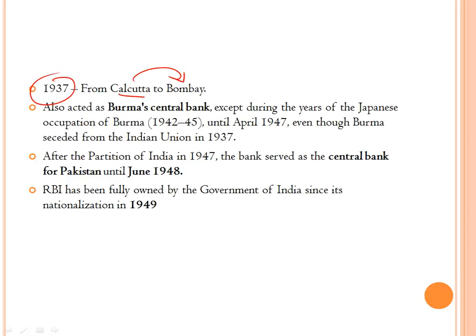The RBI also acted as Burma's central bank — except during the years of Japanese occupation of Burma from 1942 to 1945 — until April 1947, even though Burma had seceded from the Indian Union in 1937. After the partition of India in 1947, the RBI served as the central bank for Pakistan until June 1948. The RBI has been fully owned by the Government of India since its nationalization in 1949.